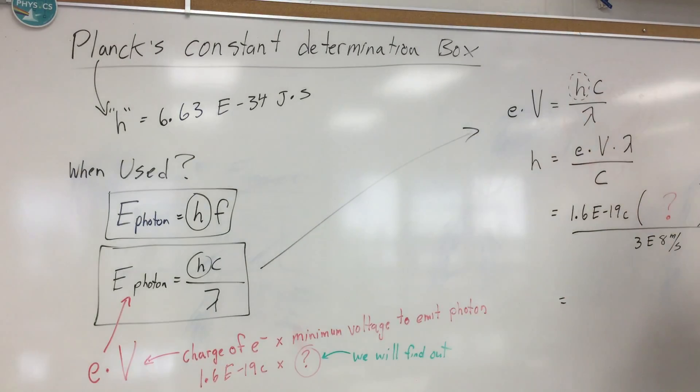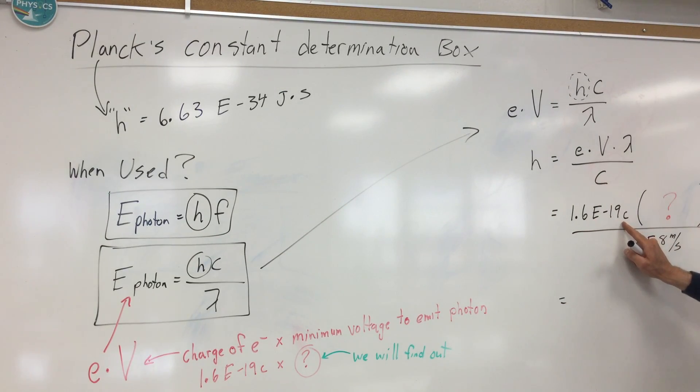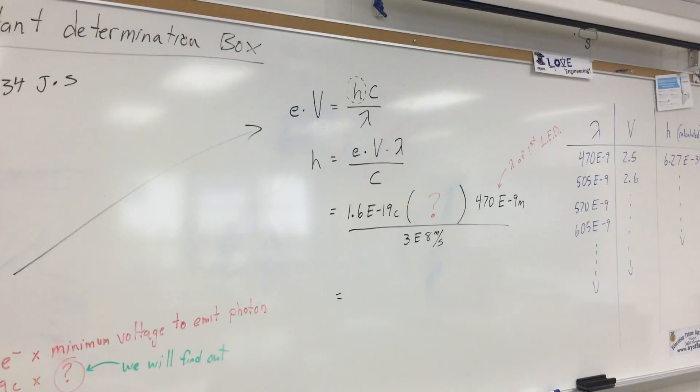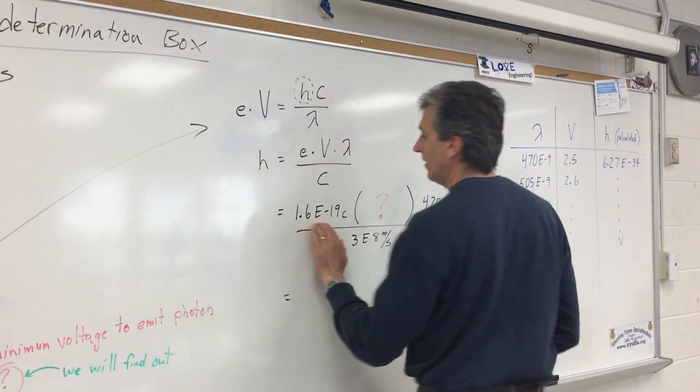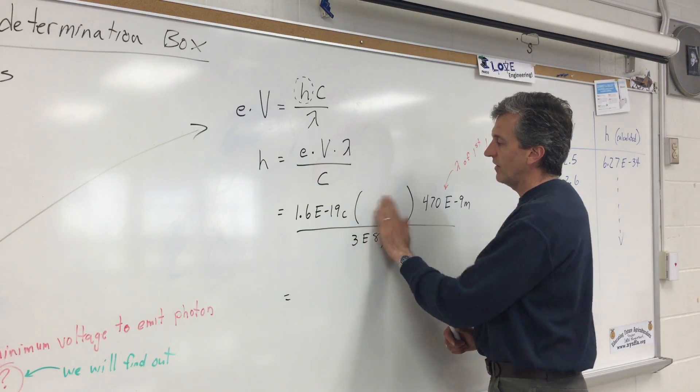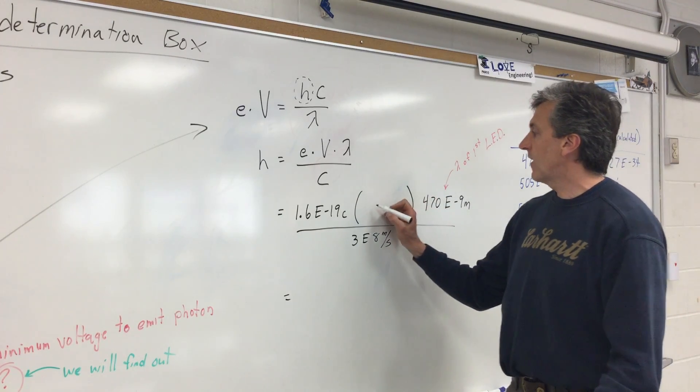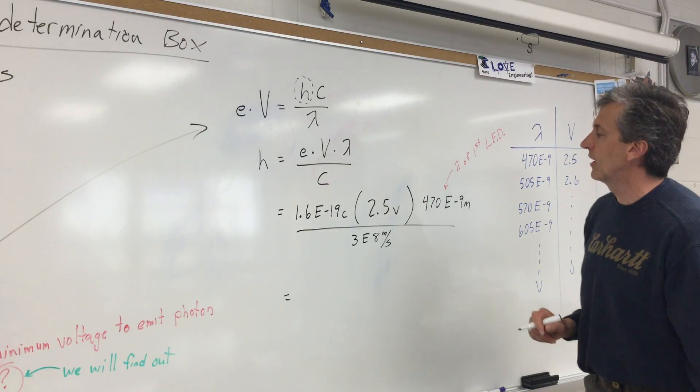So let's start plugging in some numbers. So I go to my physics reference tables and I find that the energy of an electron is 1.6 E negative 19 coulombs. We have 1.6 E negative 19 coulombs. That's a charge of an electron. The voltage in this case, we just did it and we found that that voltage was 2.5 volts. That was found by determining by turning it up slowly.